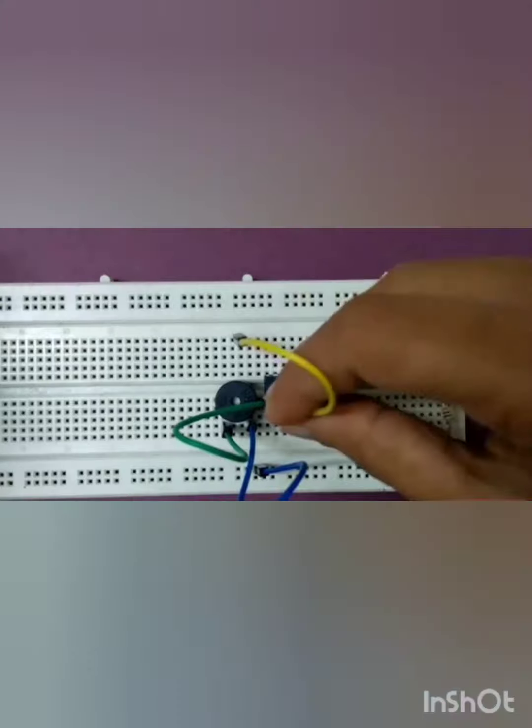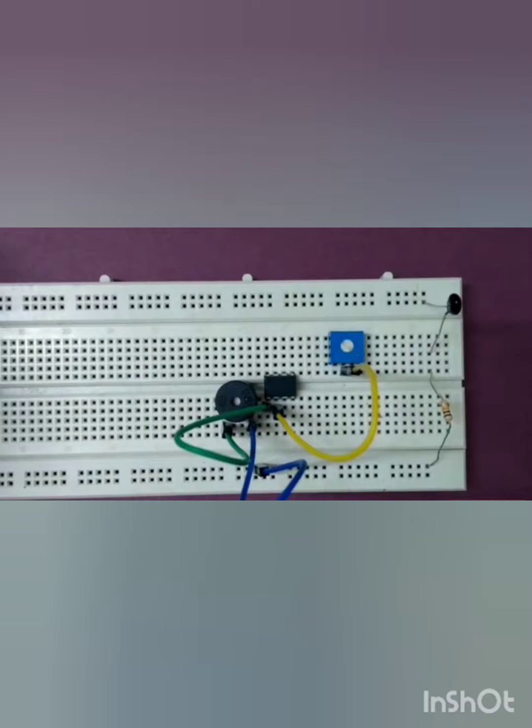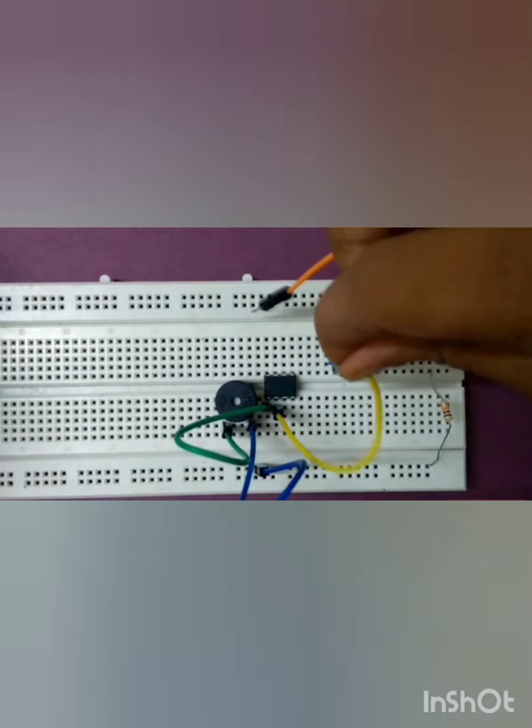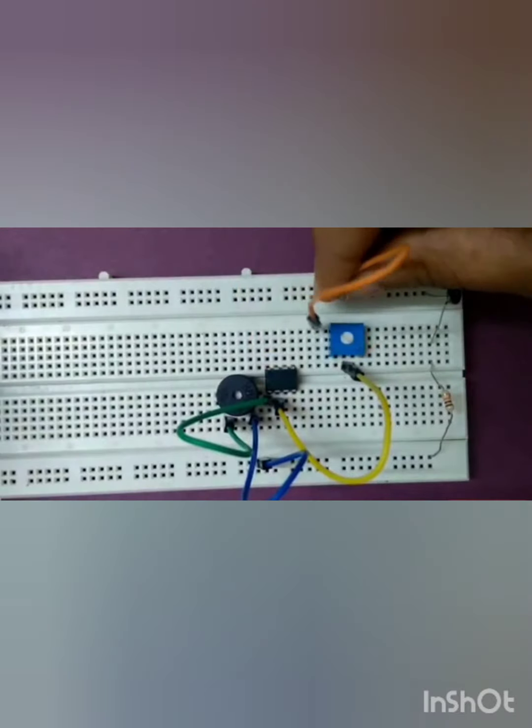Connect pin number 2 of the IC to pin number 2 or wiper of the preset and pin number 1 of the preset to positive.